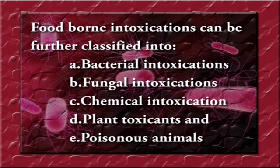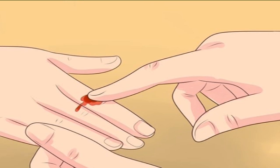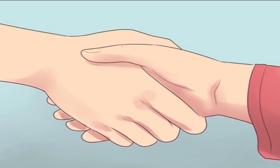Foodborne intoxications can be further classified into bacterial intoxications, fungal intoxications, chemical intoxication, plant toxicants and poisonous animals. Foodborne diseases can be transmitted in many ways, such as contact transmission, which can occur when there is direct or indirect contact with the source of disease.